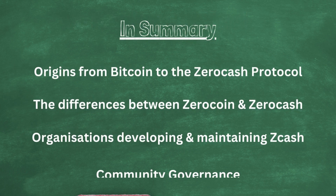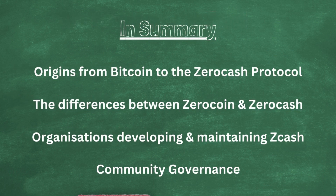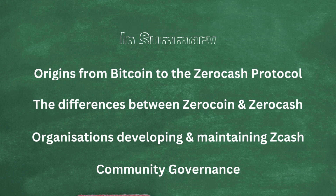So in summary, we've learned the origins of Zcash — from Bitcoin and Zerocoin to the Zerocash protocol — the important differences between Zerocoin and Zerocash, which actually made Zcash the first ever viable zero-knowledge application, the organizations tasked with maintaining and improving upon the currency, and the community governance which leads the conversation and direction of the project as a whole. Hope you've enjoyed this video — join us in the next one, where we'll be comparing the technologies used in other cryptos with Zcash and going a bit more in depth.